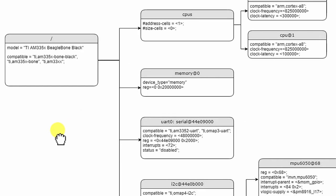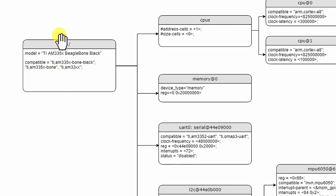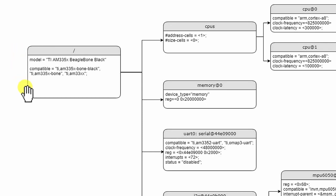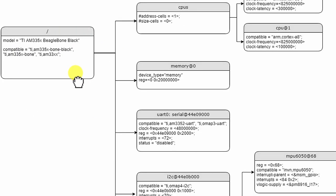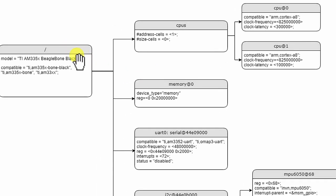This is a graphical representation of a tree structure. There will be one root node, and the root node actually doesn't have any name — it is just identified by a symbol, that is, a forward slash. A root node has its own properties, which we will discuss later. All other nodes of the device tree will be under the root node.